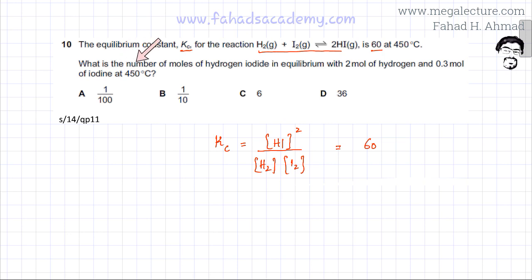What we are being asked: what is the number of moles of hydrogen iodide in equilibrium with 2 moles of hydrogen and 0.3 moles of iodine at 450 degrees centigrade. So we need to find the moles of HI which are in equilibrium.